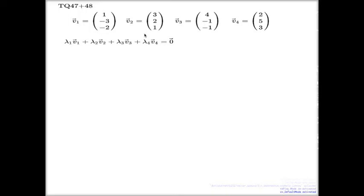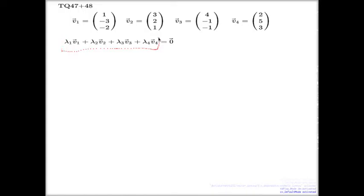Let me repeat the concept of linear dependence or linear independence. You start off from the identity with some yet-unknown coefficients, and the question you're bothered with is: can you come up with a non-trivial choice on the left-hand side - non-trivial meaning not everyone is zero - which makes it work? If you can, it is a linearly dependent set. If you cannot, it's a linearly independent set. As simple as this on the conceptual side.